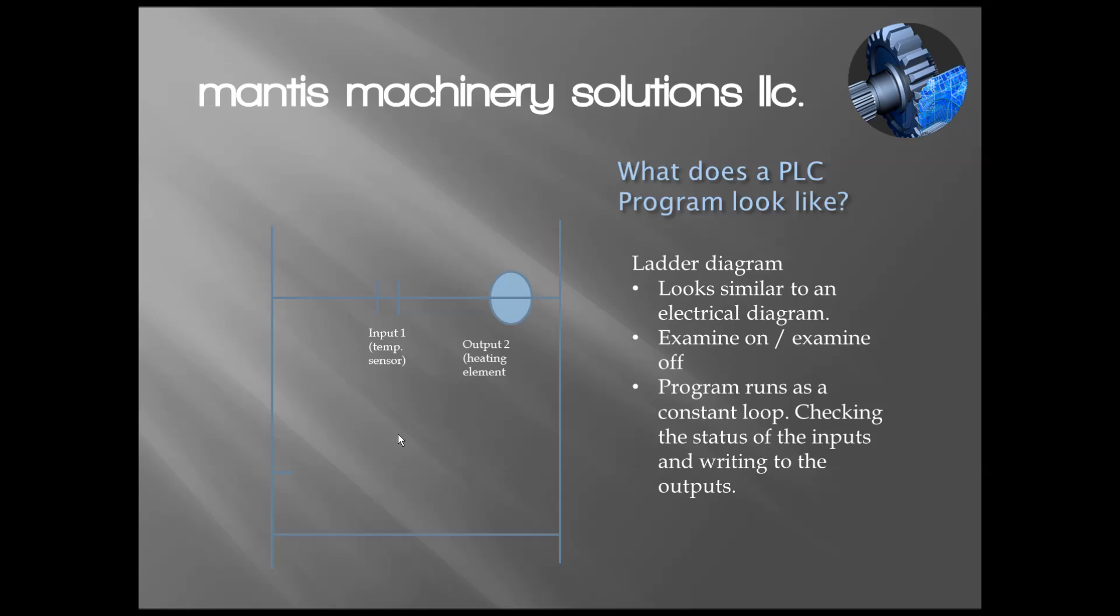The idea here is if input number one is made or high or if there's 24 volts on it, a condition exists that would cause this contact to close. It's going to complete this current path and turn on output number two. So it's really that simple. For this first rung, the only condition that needs to be made in order to create an output is to have an input on temperature on number one. As the temperature of whatever I'm trying to heat rises, it's going to remove that input here and open up this path, and the output is going to turn off.